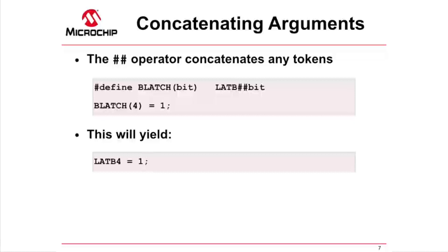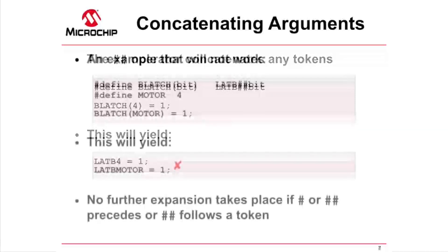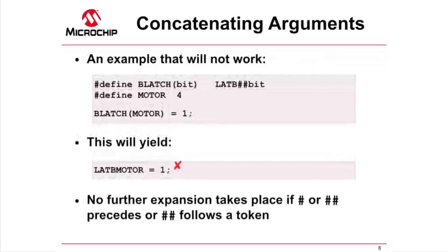This is very useful, but there is a potential problem if the arguments themselves are other preprocessor macros. Let's say that the programmer has adjusted their code in the previous example to make it a little bit more readable. A new macro has been added that defines MOTOR to be the port pin 4. However, you can see in the lower example box, the expansion of this macro did not take place when it was used, and we are left with a non-existent identifier LATB_MOTOR.